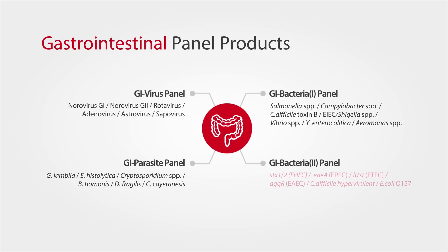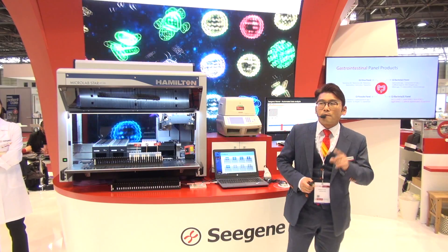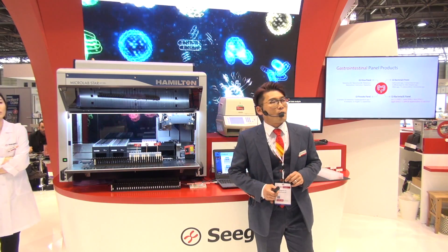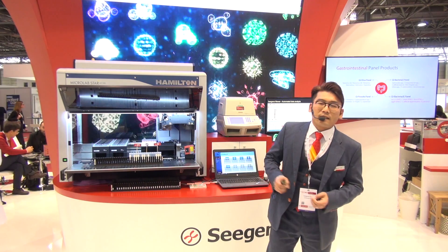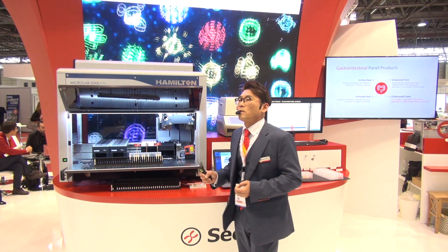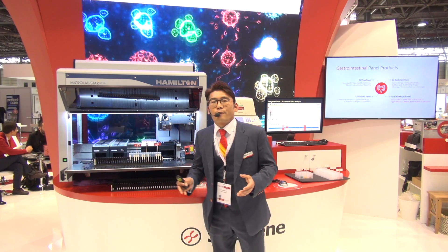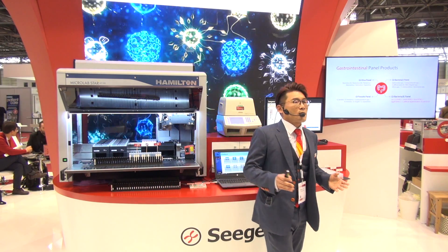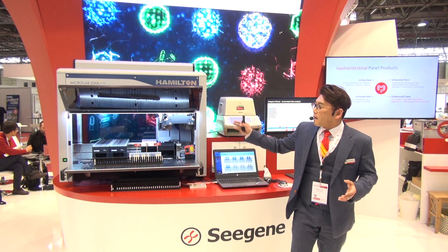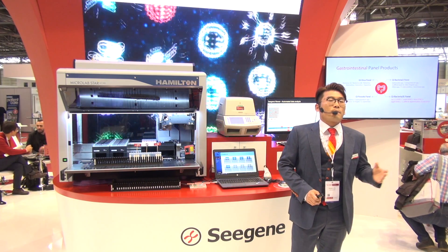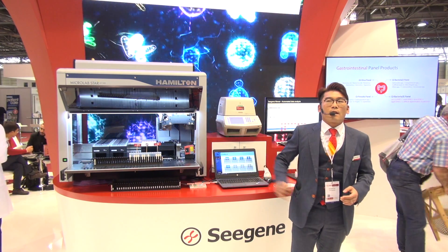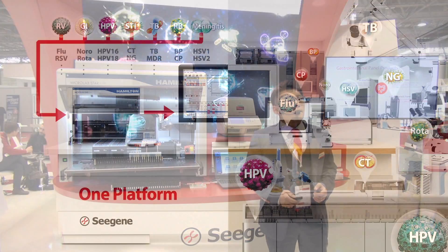Looking at Bacteria Panel 2 on screen, not only all standard targets, but also three additional subtypes of E. coli can be distinguished at the same time, providing clear CT values for each pathogen. Through the one-platform system and Seasons' high-throughput technology — up to 96 wells and within 8 hours — close to 400 samples can be run and identified at the same time from the full Seasons gastrointestinal package.